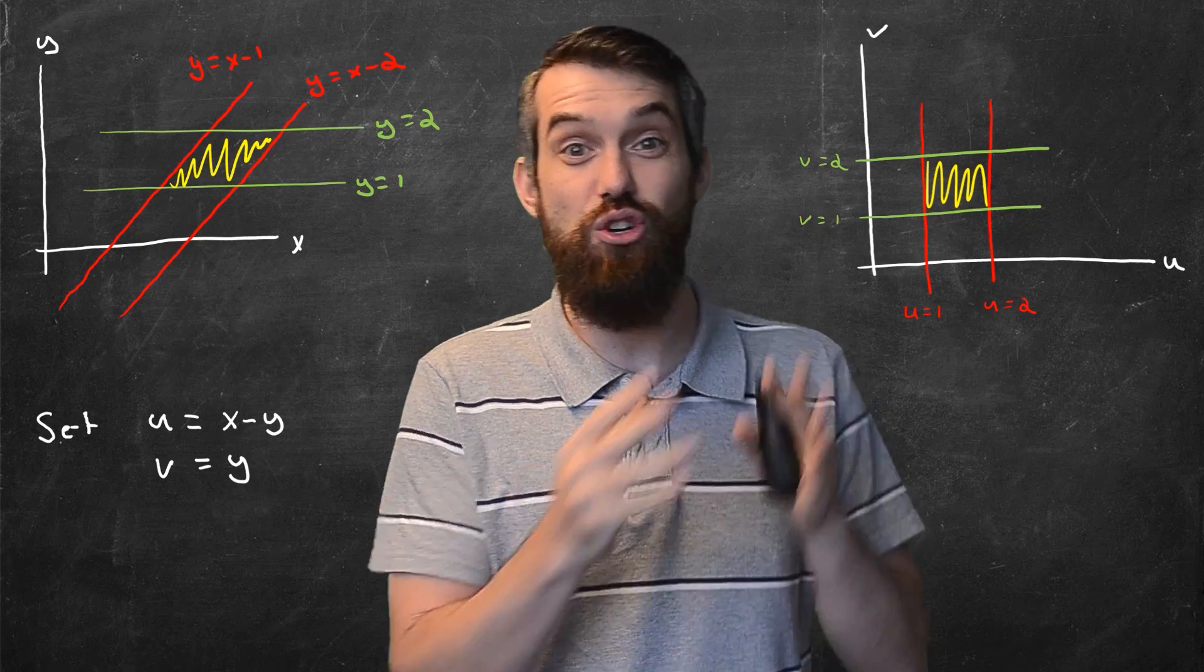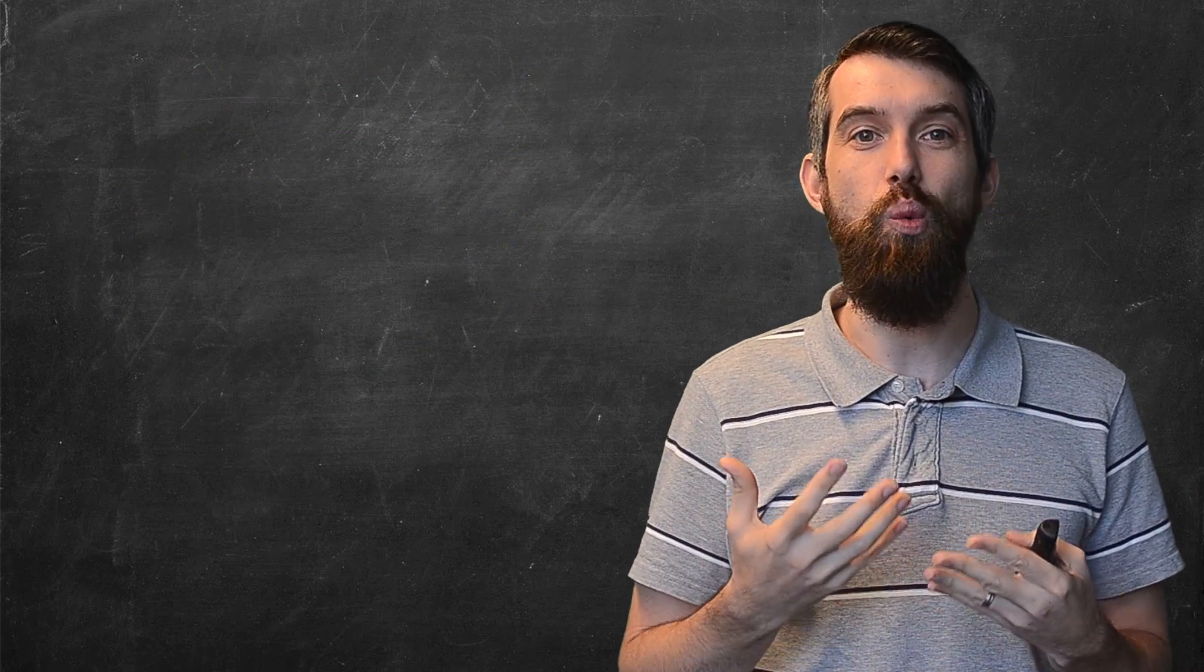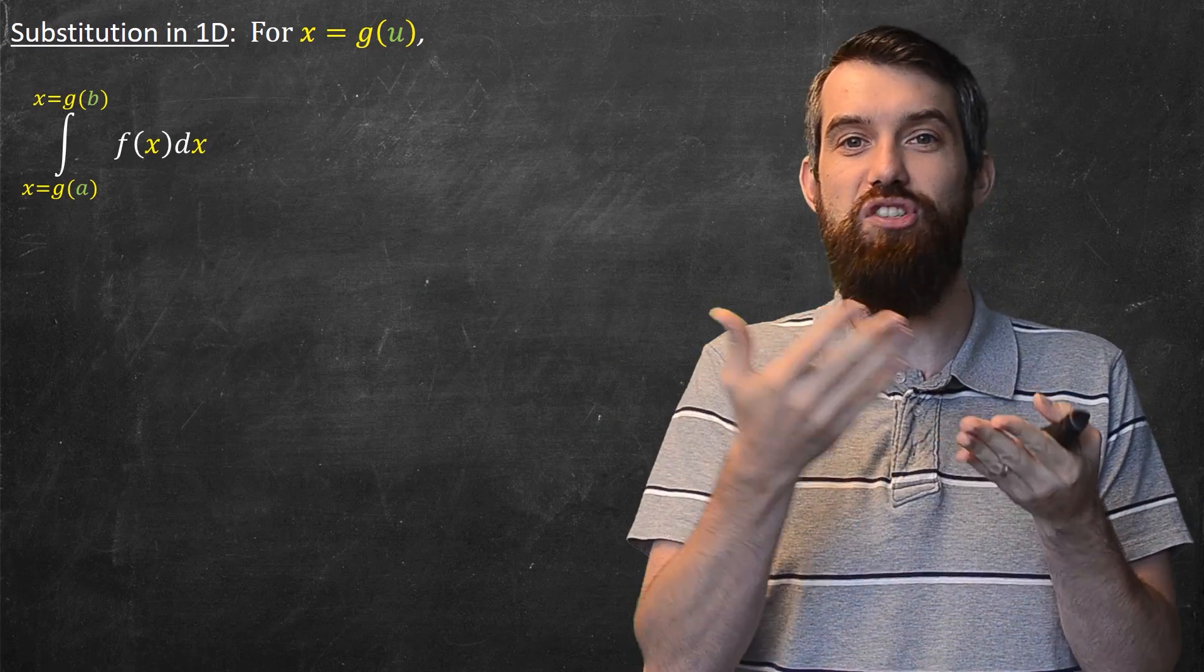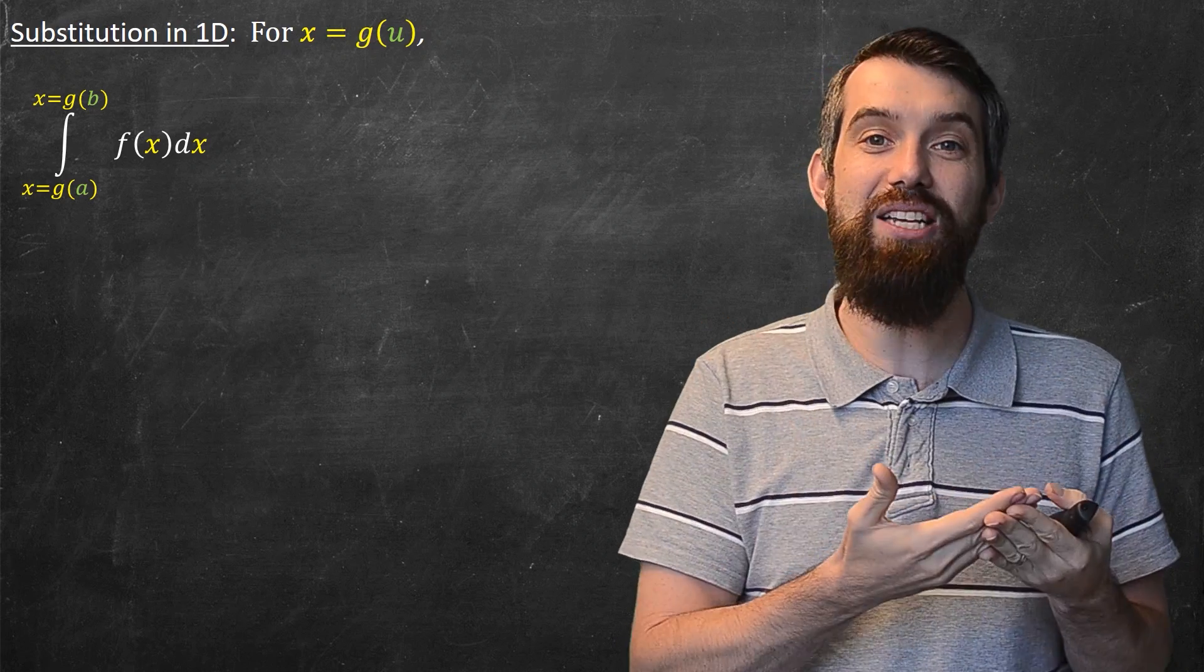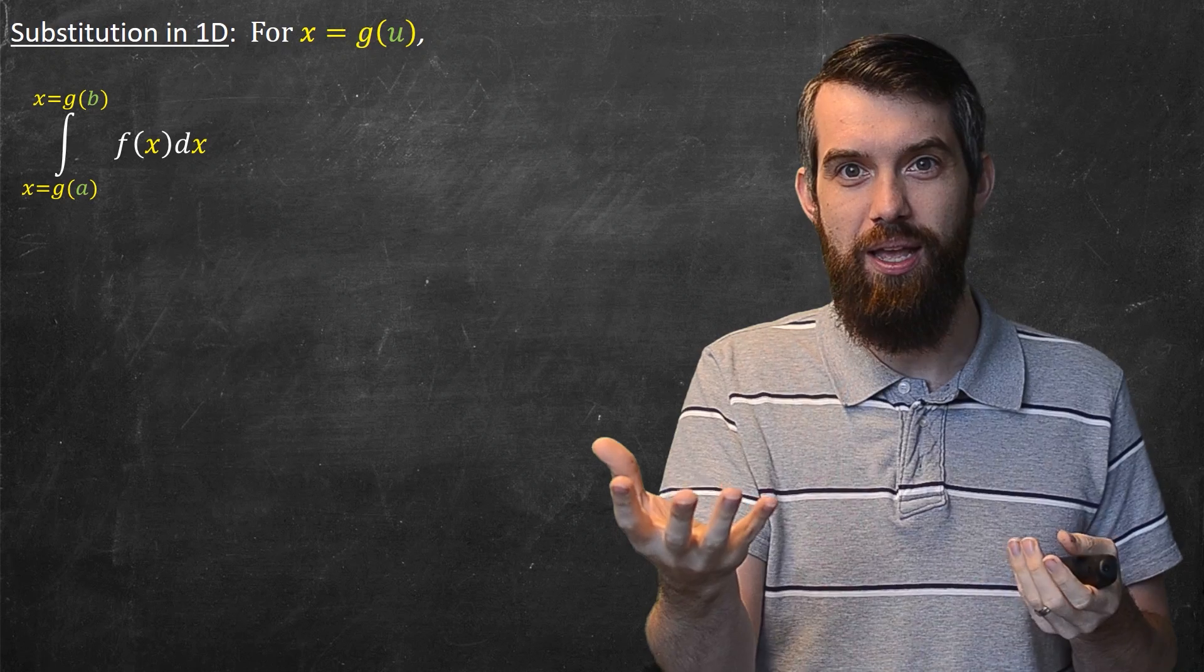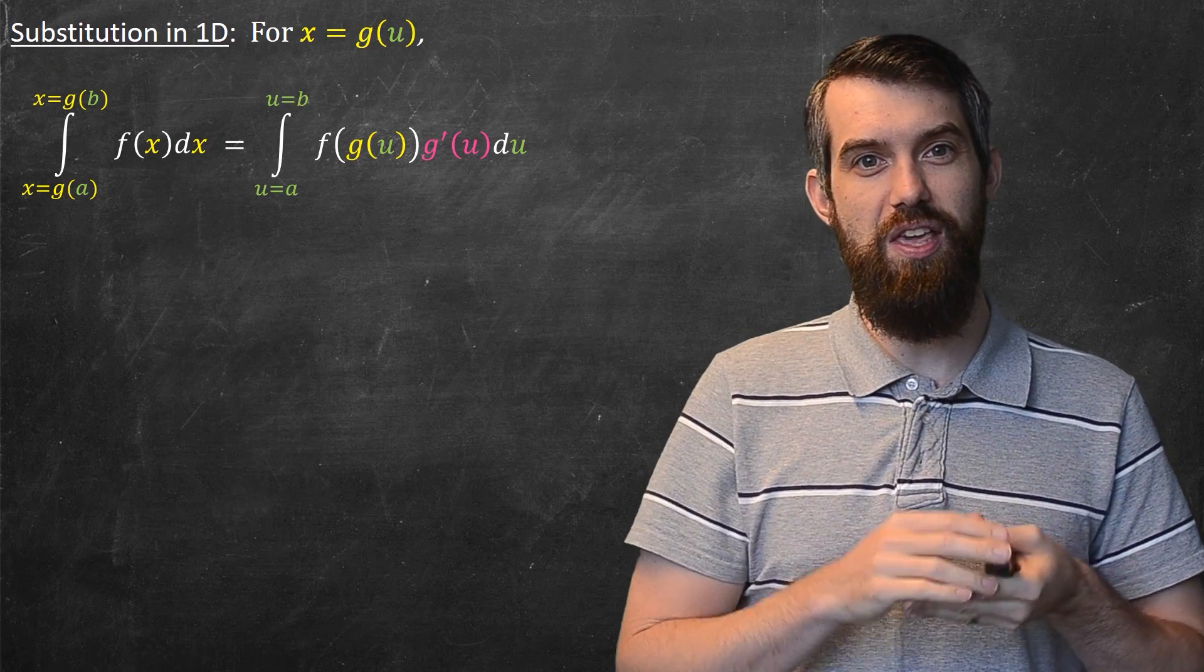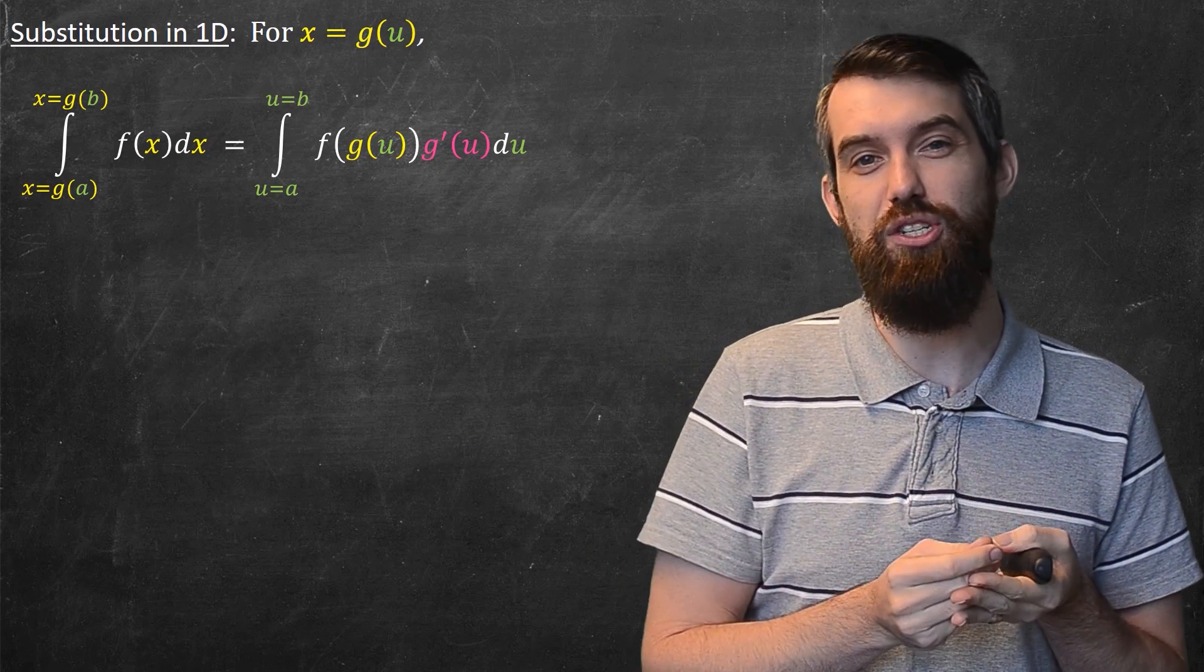So how do I actually integrate in some new generic coordinate system? Let's think back to what we used to do for single variable u substitution. The idea was the following: suppose I have an integral of some function of x dx. Then what I can do is take x and write it as some function of a new variable u. And then what the u substitution did was it allows us to rewrite this as a new integral in terms of u. The function of x is now turned into f of g of u, because x is defined to be g of u.